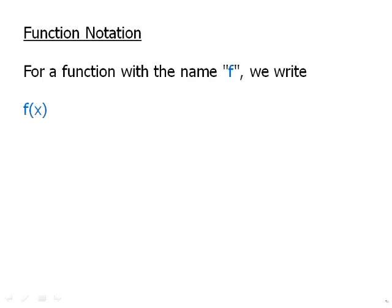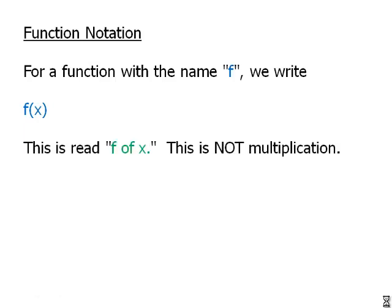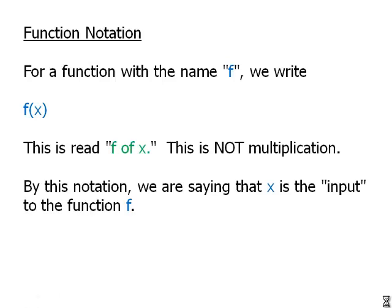So, function notation for a function with the name f, we write it this way. We write f, and then we write the x in parentheses. This is read f of x. And this is not multiplication. We're not taking a number f and multiplying by the number x. f is technically what's called an operator. It is performing an operation on x. By this notation, we're saying that x is the input to the function f.